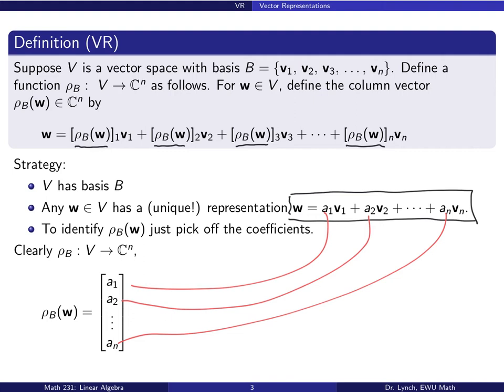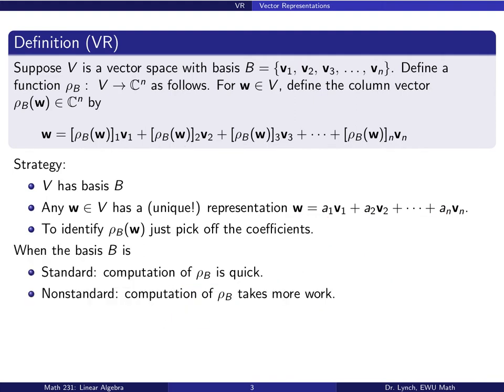As we'll soon see, ρ_b is linear, ρ_b is injective and surjective, thus invertible. When b is a standard basis, computation of ρ_b is quick. But when b is non-standard, computation of ρ_b takes a little more work. We'll see both of these cases in examples.